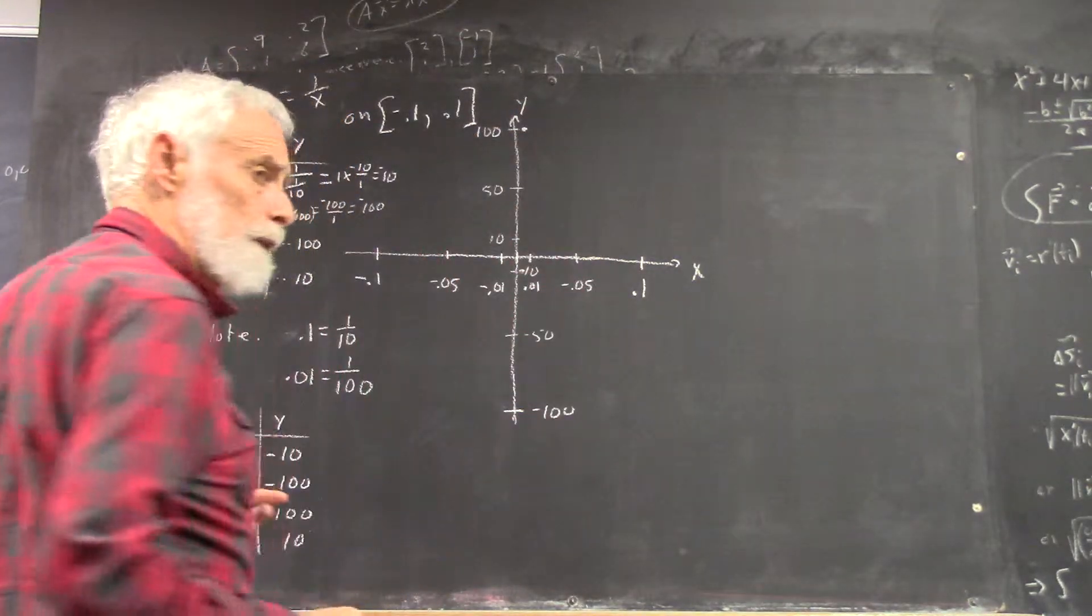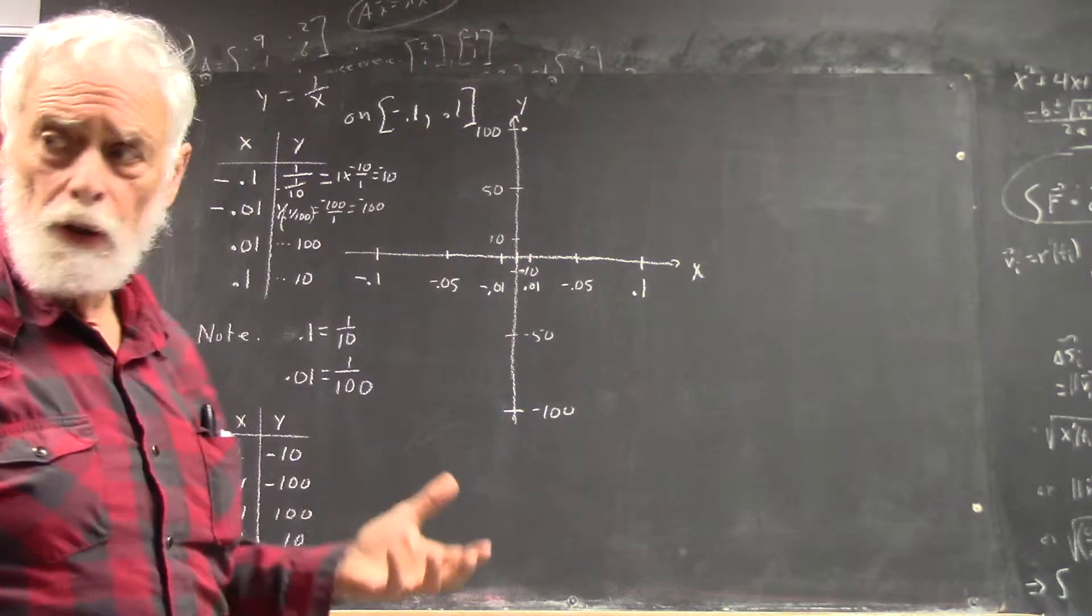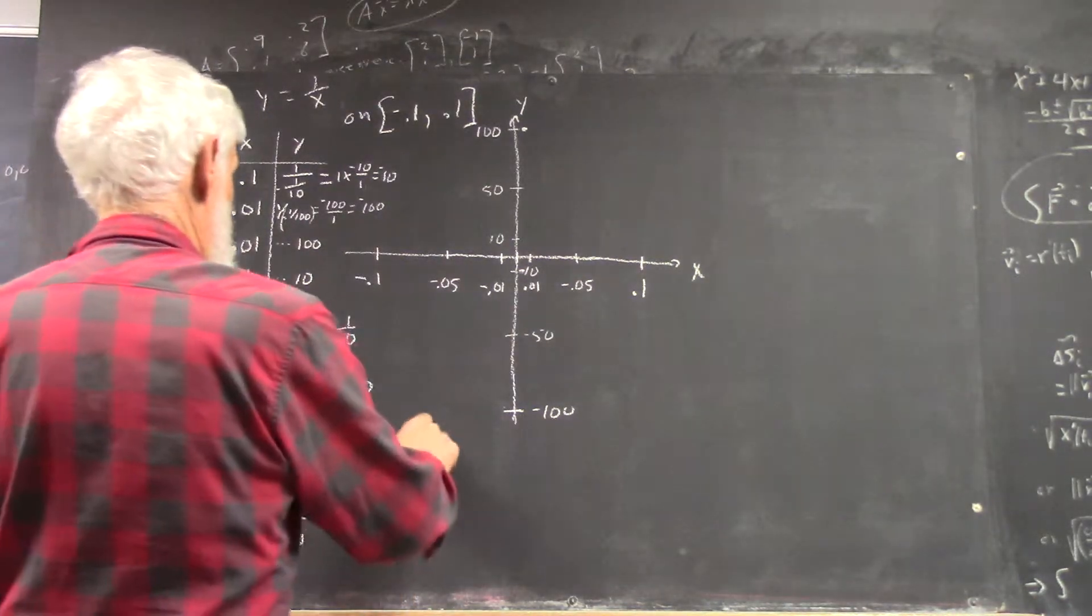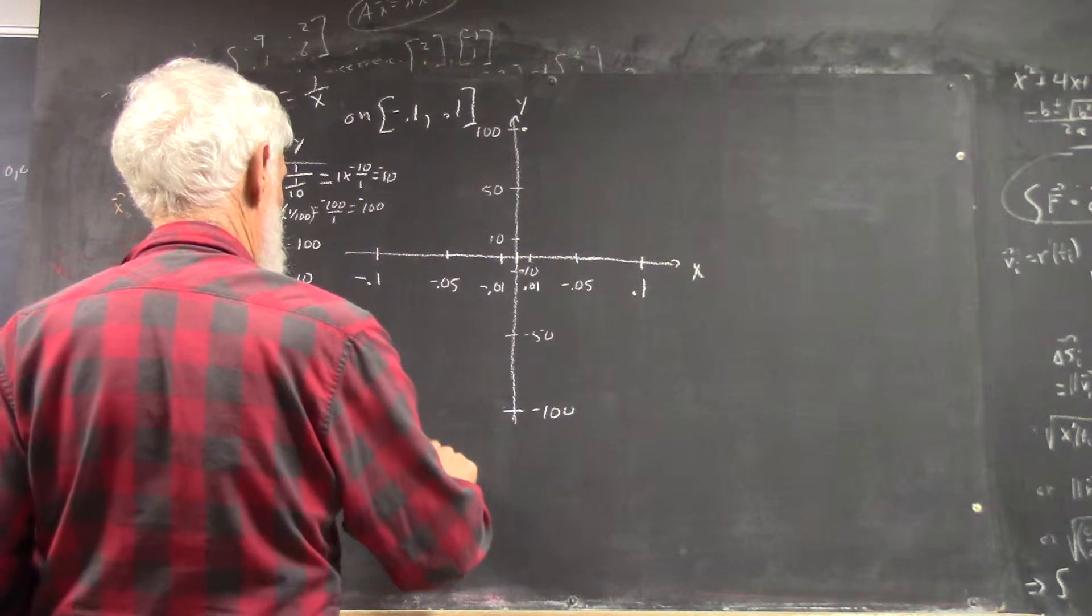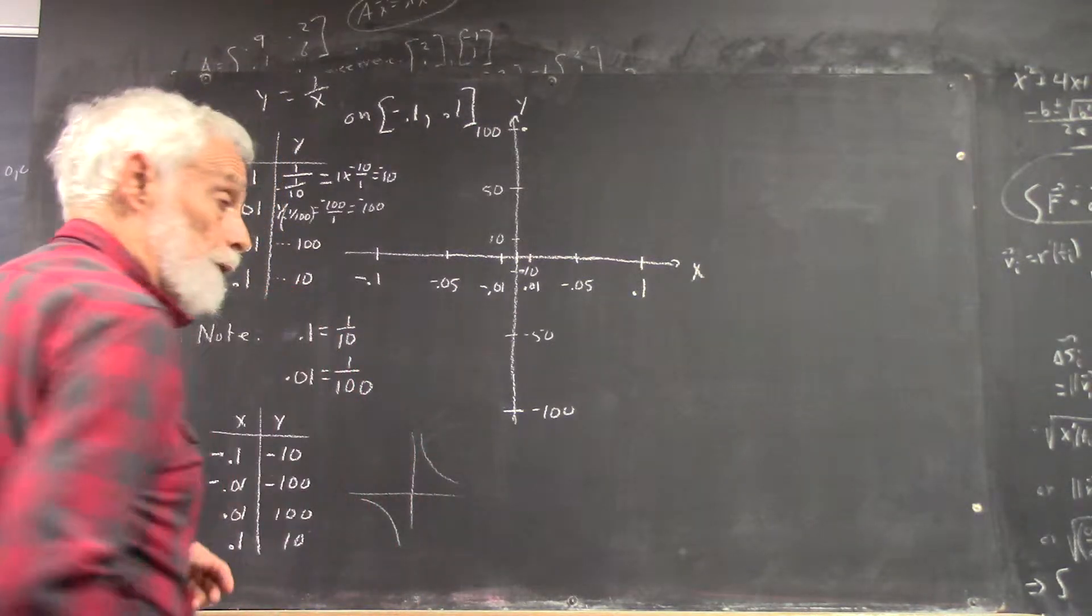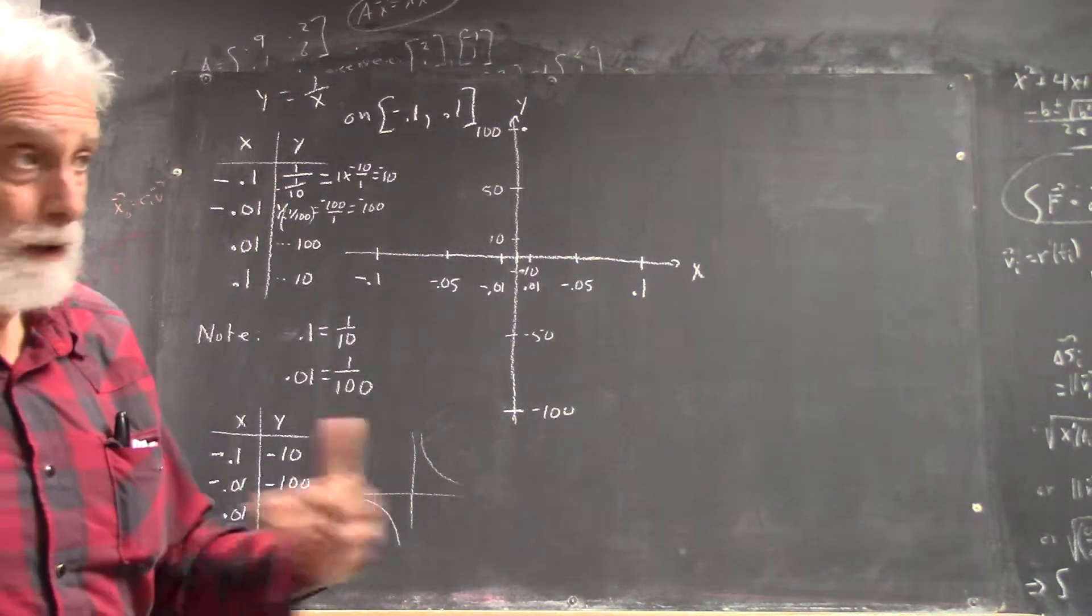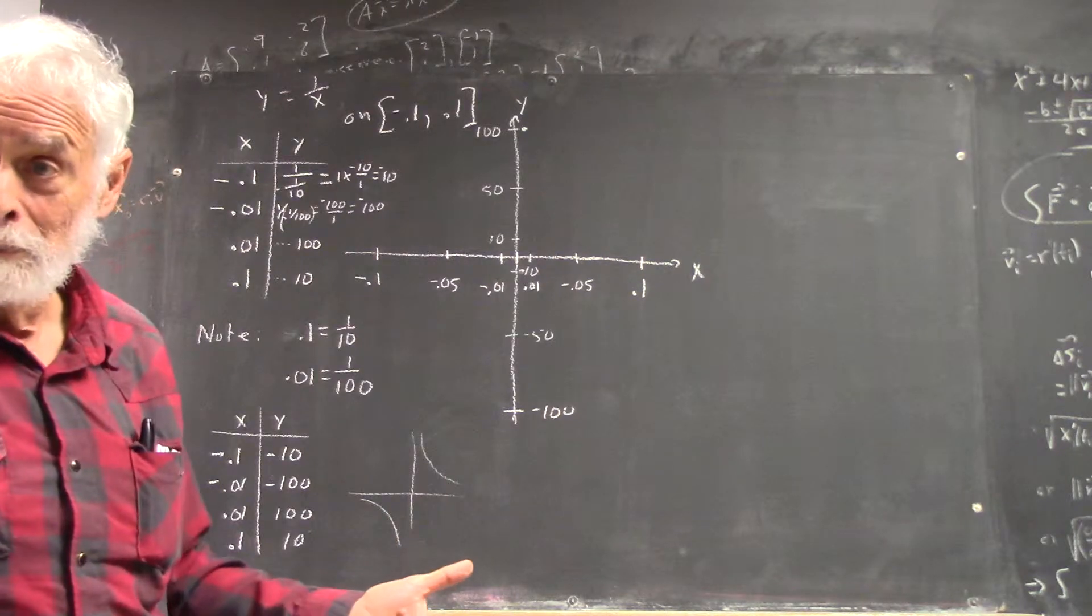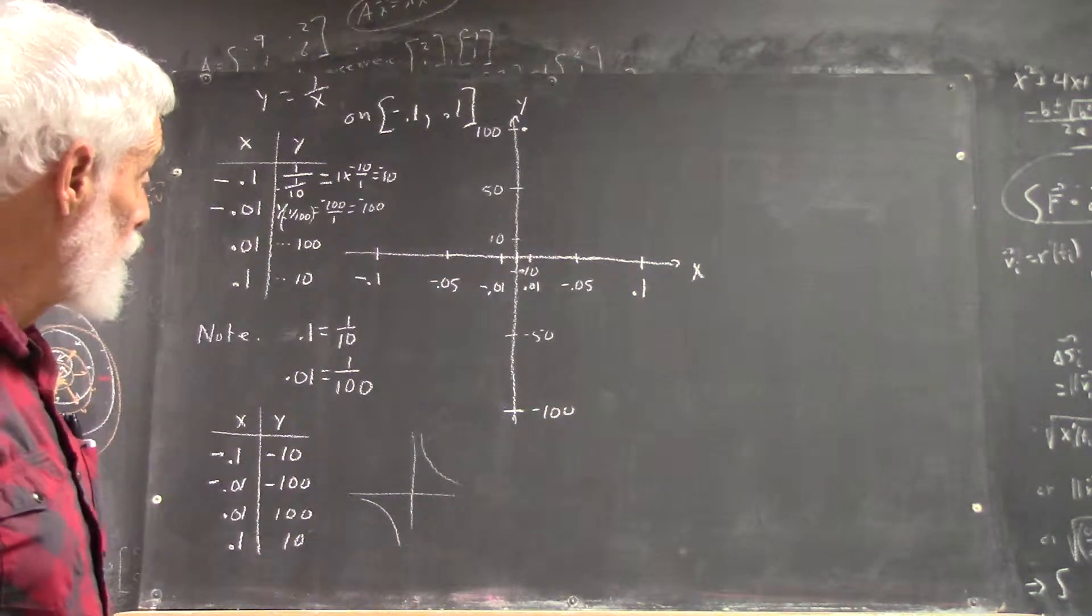Then, knowing what the graph of 1 over x looks like, I mean, everybody should know and just be able to very quickly sketch an approximate graph of 1 over x, having done it so many times, hopefully. You know it's going to look like this.